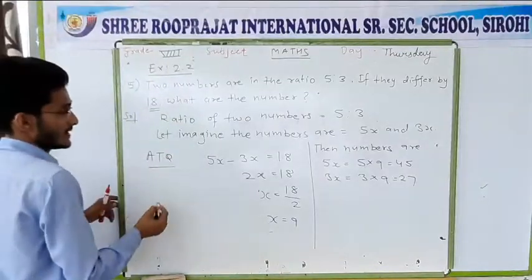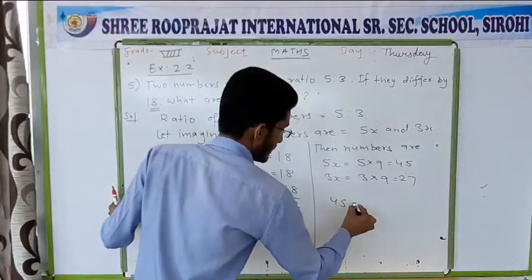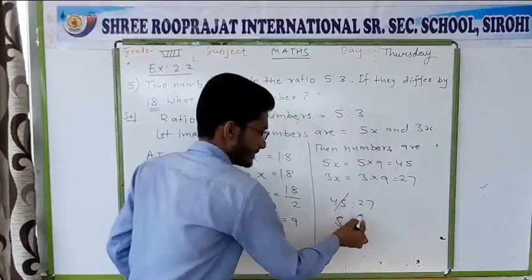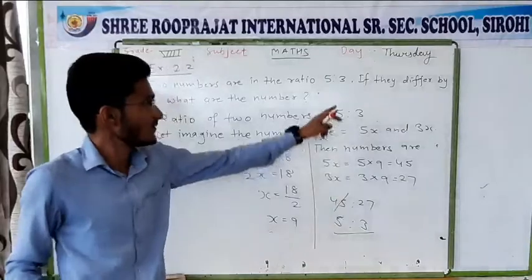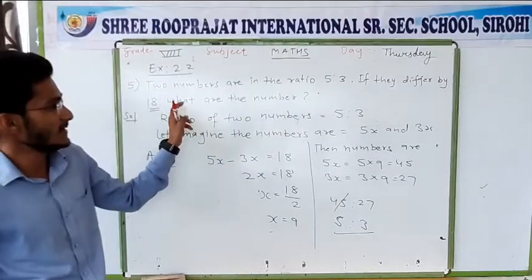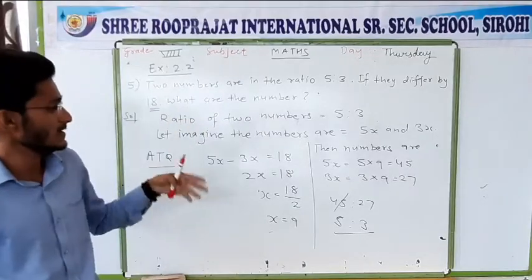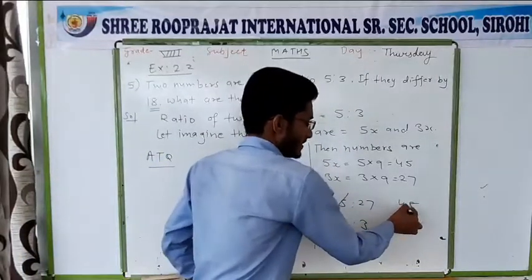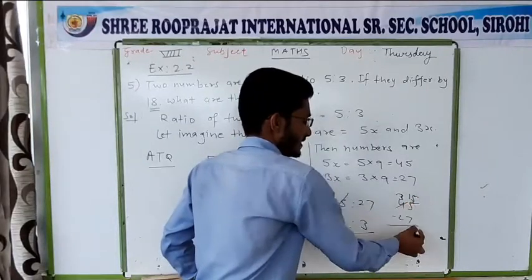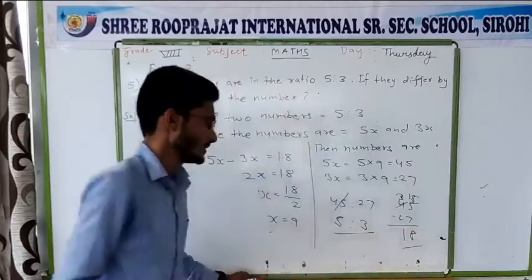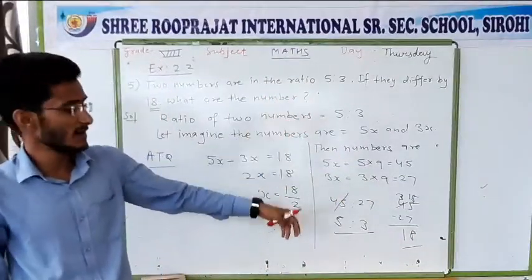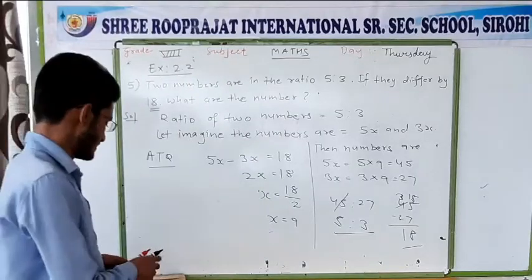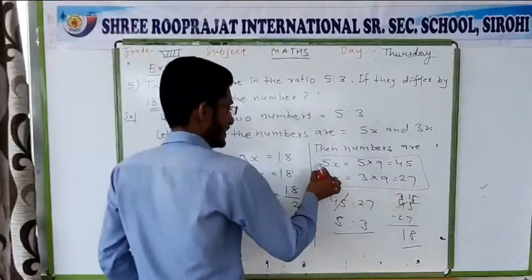If you want to check, here are the two conditions. For 45 and 27: if you divide both by 9, you get a ratio of 5:3. For the second condition, the difference should be 18. So 45 minus 27: take a borrow, 15 minus 7 is 8, and 3 minus 2 is 1, giving 18. Both conditions are satisfied. So your answer is 45 and 27.